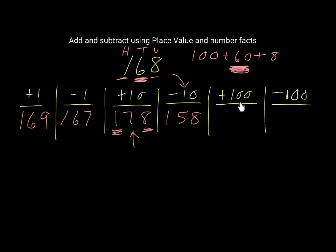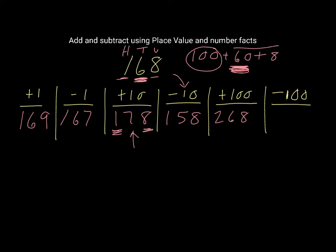Now we're going to go over to the 100s digit, which is the 1. We have one set of 100, which gives us 100. We're going to add another set of 100, which means our new number is going to be 268. And if we subtract 100 from 168, that means we're getting rid of this 100 here, which leaves us just with 68.